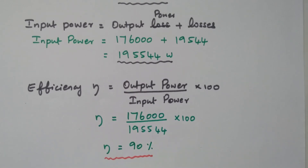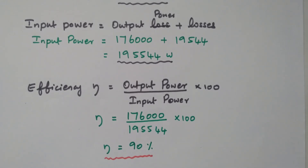The efficiency of this short shunt compound generator is 90 percent. In this problem, first we calculated the power output, then the armature current. Using the armature current and shunt field current values, we calculated armature copper loss, shunt field copper loss, and series field copper loss. From that we calculated the total losses — armature copper loss, shunt field copper loss, series field copper loss, stray loss (mechanical and magnetic loss), and brush loss. Once the loss is calculated, input equals output plus losses, and with input and output power we calculated the efficiency of 90%.